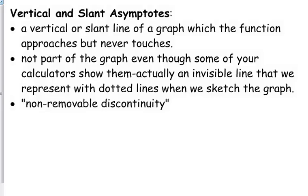A vertical or slant asymptote is a vertical or slanted line which the function never touches. It will approach it, but it will never touch it.